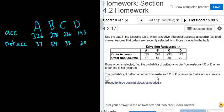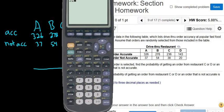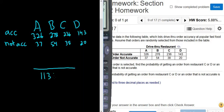So we want the probability of C or D or not accurate. On the bottom, we have to have the total. So let's go ahead and figure out the total first. To figure out the total, you add everything up. So 326 plus 37 plus 278 plus 54 plus 236 plus 38 plus 143 plus 20. So 1132, that's the total, and that always goes on the bottom.